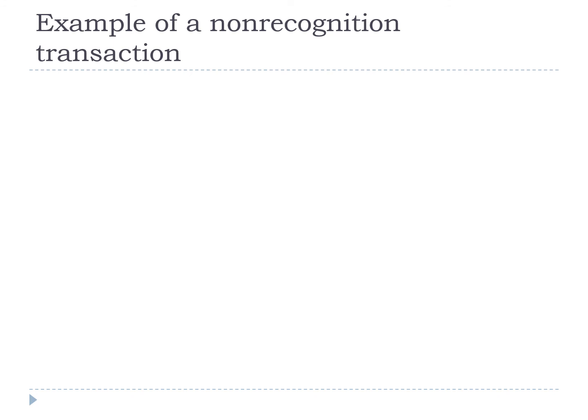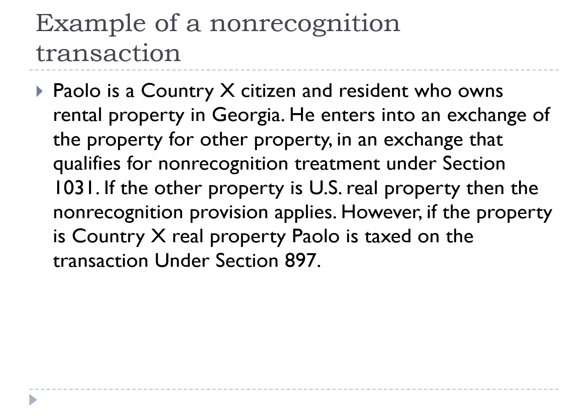Here's an example of a non-recognition transaction. Paolo is a Country X citizen and resident who owns rental property in Georgia. He enters into an exchange of the property for other property in an exchange that qualifies for non-recognition treatment under Section 1031. If the other property is U.S. real property, then the non-recognition provision applies. However, if the property is Country X real property, Paolo is taxed on the transaction under Section 897.